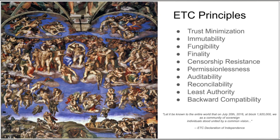Before we compare and contrast ETC and Ethereum 2.0, let's take a look at the foundational principles of Ethereum Classic. These are trust minimization, immutability, fungibility, finality, censorship resistance, permissionlessness, auditability, reconcilability, least authority, and backwards compatibility. In the words of McIntyre, each of these principles has a specific function in guaranteeing sound money, property, and agreements on the platform, even in the absence of higher authorities, which is precisely the desired state of affairs.